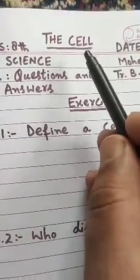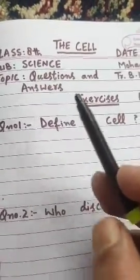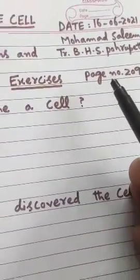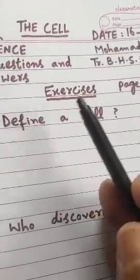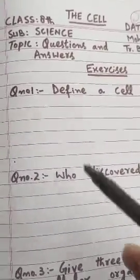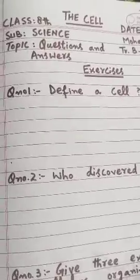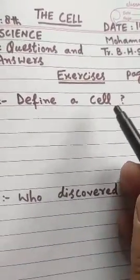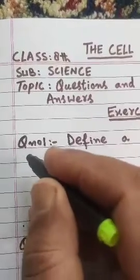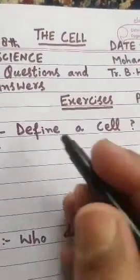Welcome back to the chapter 'The Cell', Class 8 Science. Today's topic is question answers on page 209 of your textbook. There are exercises written on this page and we are going to solve question number one, two, and three. Question number one is: define a cell. I will write the answer and then explain what we have written.